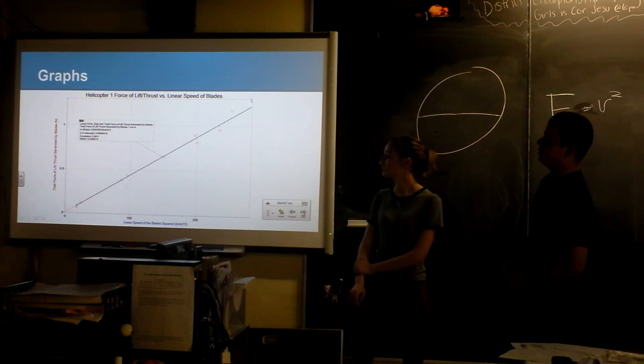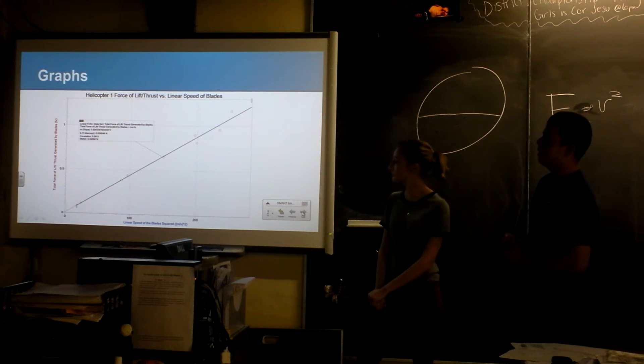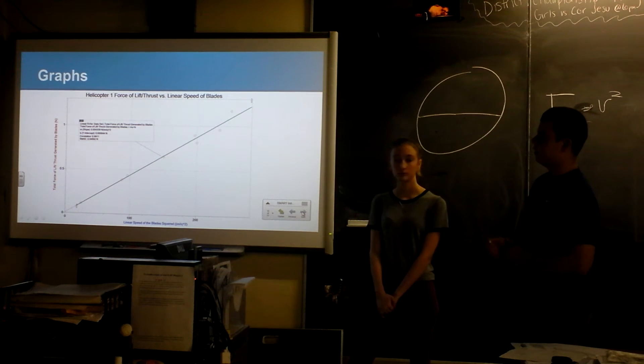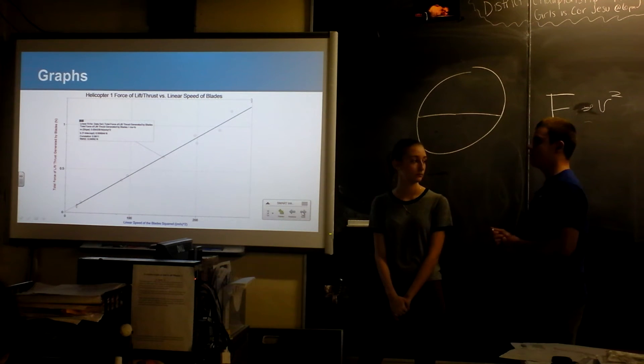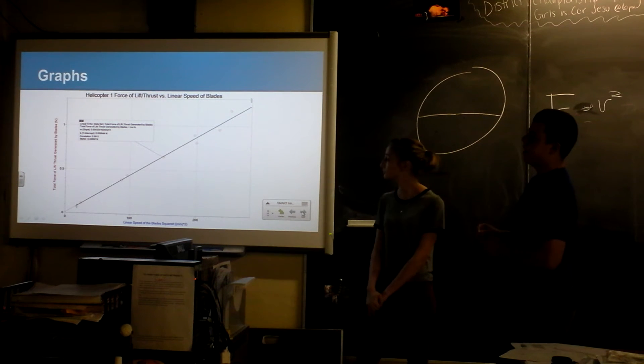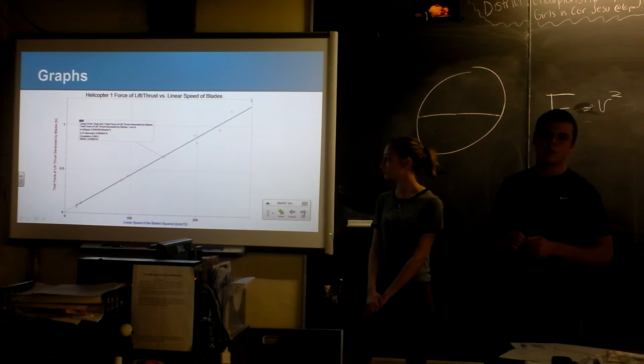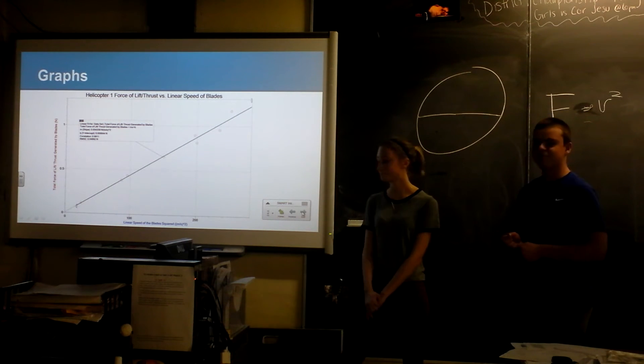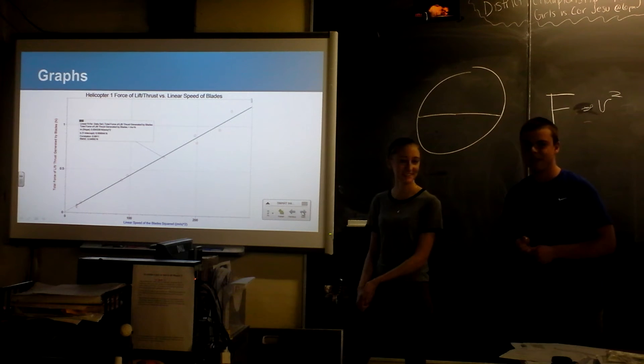So our graphs. These graphs are really what validates our hypothesis. These are graphs of the force of the lift or thrust against the linear speed of the blades, which was squared. And it shows a linear line. And from that slope, you can determine the lift coefficient, which is what we do later in the lab. That's really linear!